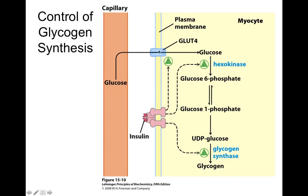The key is getting glucose into the cell using the GLUT4 transporter receptor protein at the plasma membrane. This doesn't just happen all the time — it has to be controlled. The regulator is insulin, an extracellular signal that doesn't enter the cell but binds to its receptor, undergoes a conformational change, and signals to activate three things: our GLUT4 receptor so glucose can enter, our hexokinase so glucose can be transformed, and our glycogen synthase.